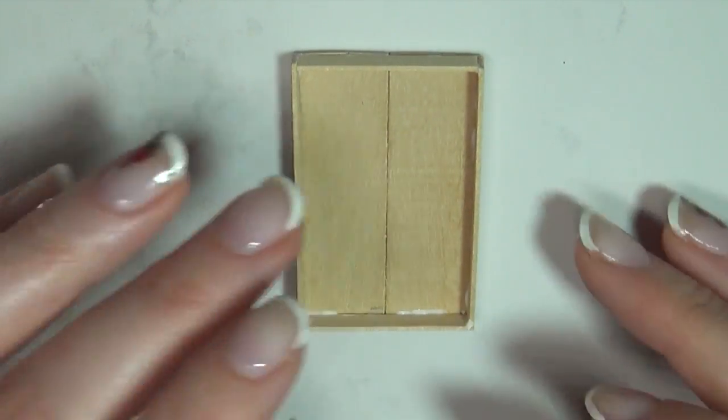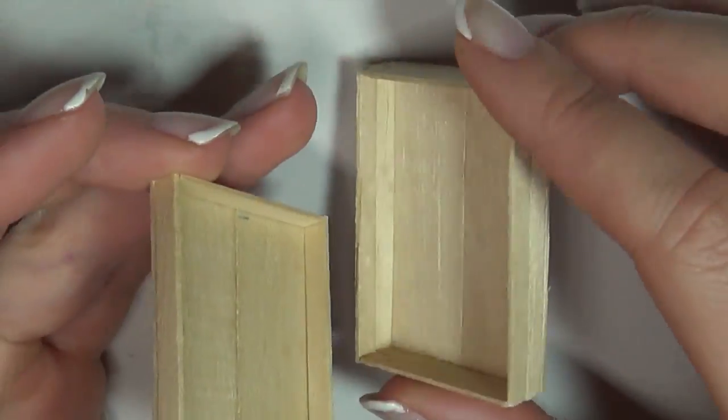Let it dry and that's the front of our suitcase. I made the bag a little deeper using two stirring sticks for the sides.